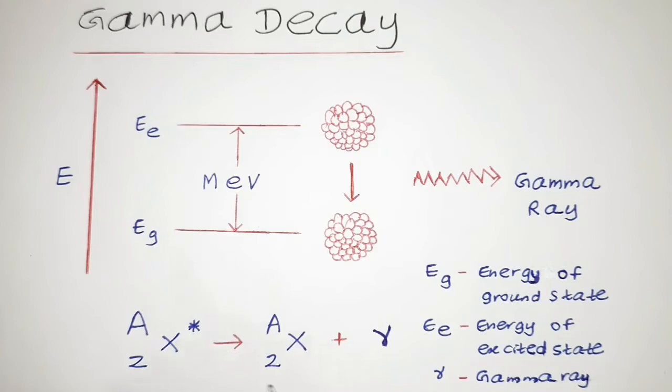If you have a nucleus in its excited state where the nucleons are not in its ground state configuration, some of the nucleons might be in the excited state. In such an excited state, nucleons can become a stable version of itself by jumping from a higher excited state to a lower excited state. This will lead to the emission of a gamma photon. This is known as gamma decay.